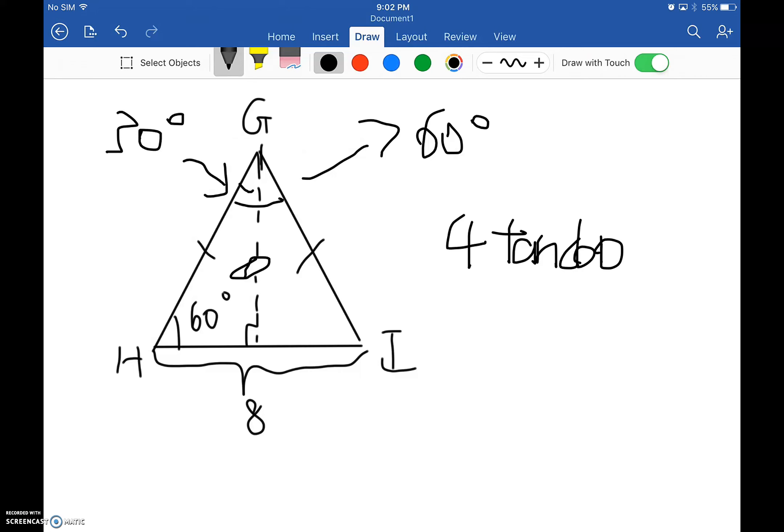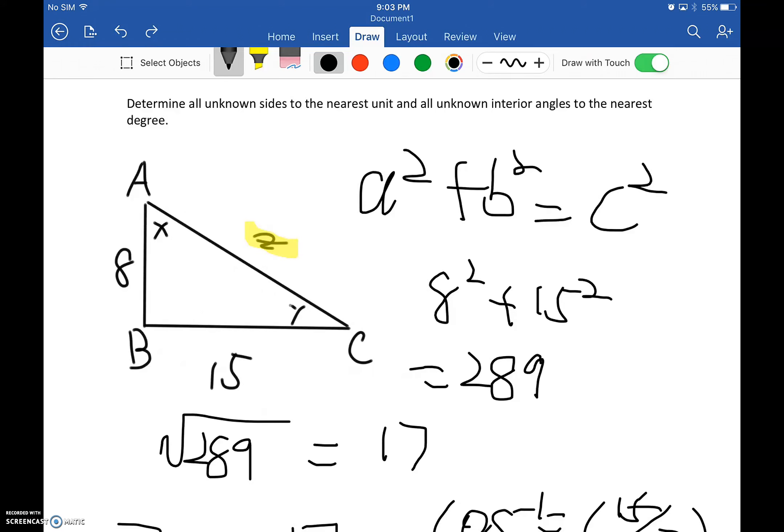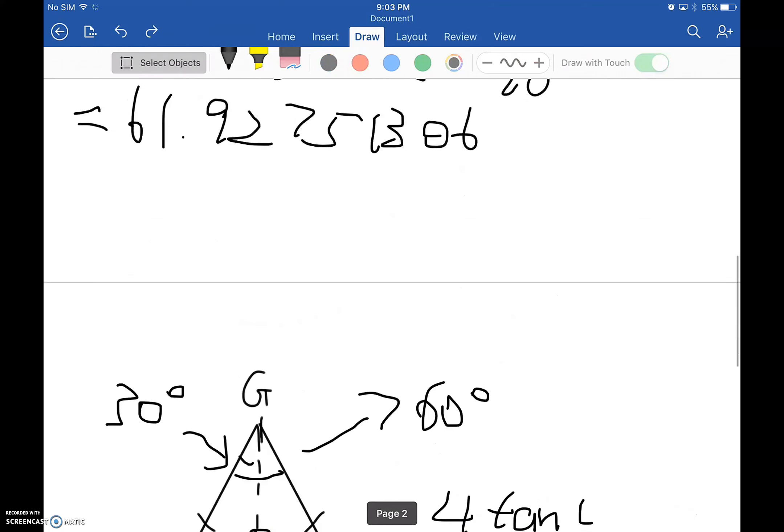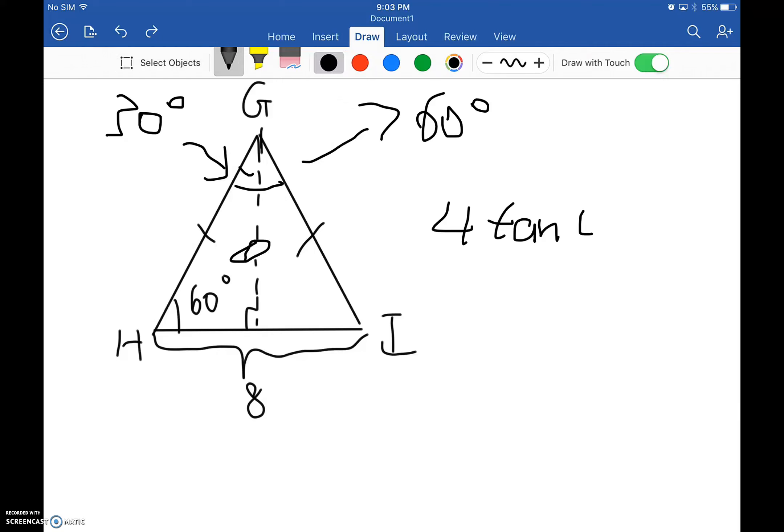So, for tangent, 60 degrees, cause we are finding the angle, right? 60 degrees equals, what it is? 6.9, 28, 20, 323. Alright, so this for J, I believe. Yeah, it is for J, as you can see from the textbook and for I.